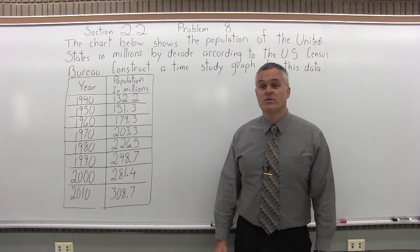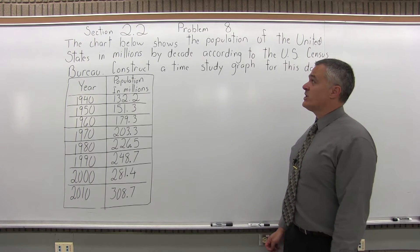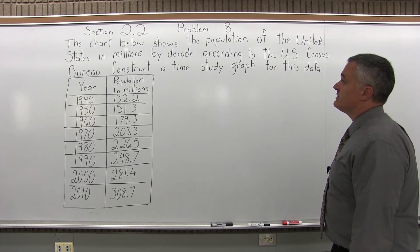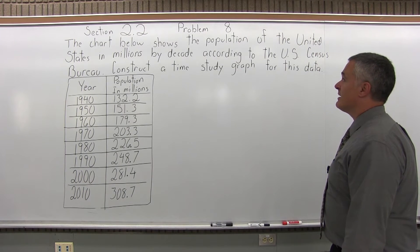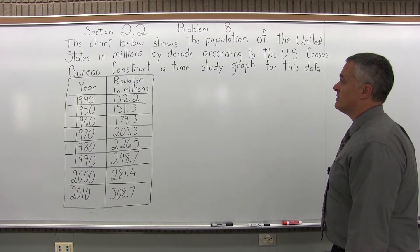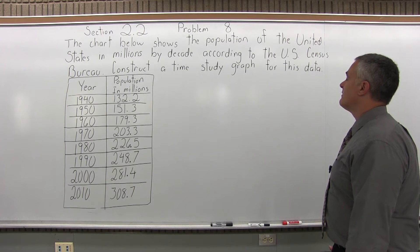This is Section 2.2, Problem 8. It says the chart below shows the population of the United States in millions by decade according to the U.S. Census Bureau. Construct a time study graph for this data.